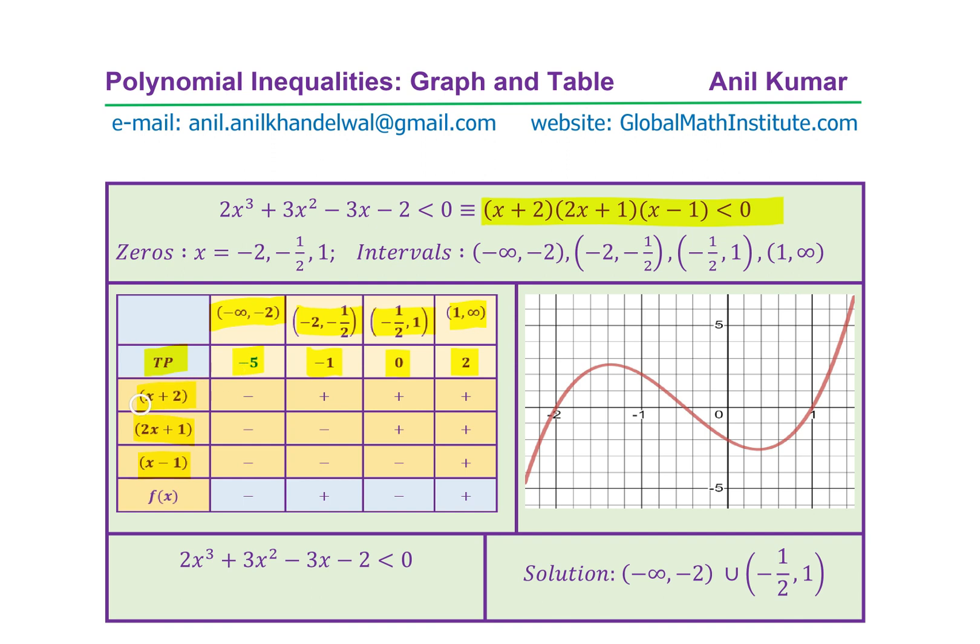So let's test for the first factor, which is x + 2. Substituting -5, we get minus. -1 gives you plus, 0 gives you plus, and 2 gives you plus. I mean, 2 + 2 is 4, but you're not interested in the value. You want to check the sign. And therefore, only the signs are written. So we have minus, plus, plus, and plus.